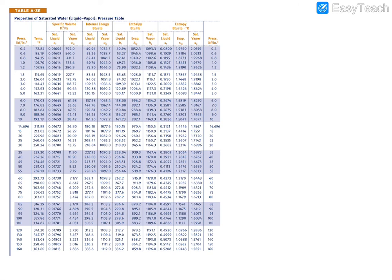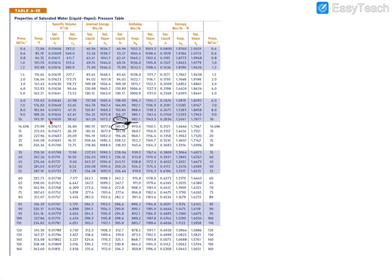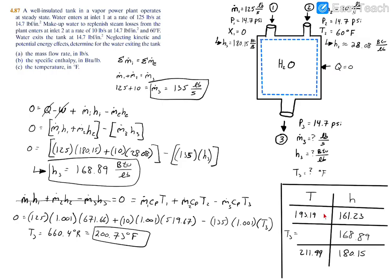I'll circle what our specific enthalpy is, or the closest values to it. We have 168.89, so the closest values are 161.23 and 180.15. We're somewhere right here between these two values. With these filled in, we need to find the correlating temperatures. We have 193.19 Fahrenheit for the first enthalpy, and 211.99 Fahrenheit for the second enthalpy. We have all our values to interpolate.